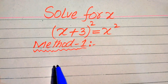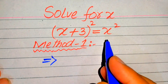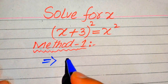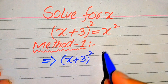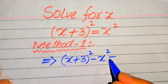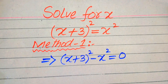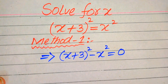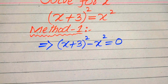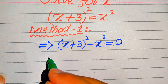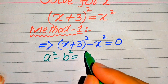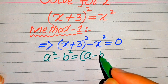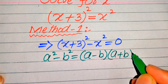The first thing we do is move x² to the left hand side. It will be written as (x + 3)² minus x² equals 0. Now, in order to convert this into standard form, we use the algebraic formula: a² minus b² equals (a minus b) times (a plus b).